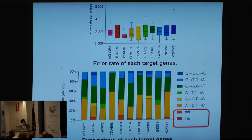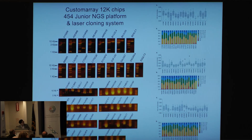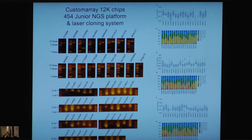We also realized that our synthetic genes have a very small proportion of deletion and insertion errors, which is a little different from the conventional synthetic strategy. Currently, we are finalizing the strategy to make tens of Cas9 genes.